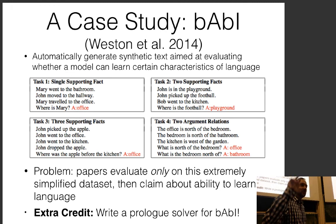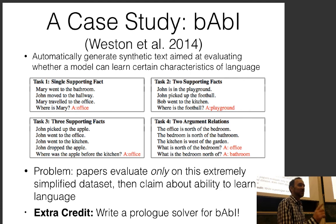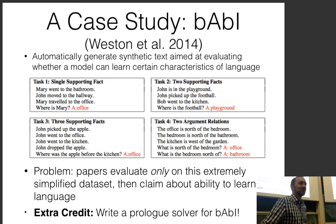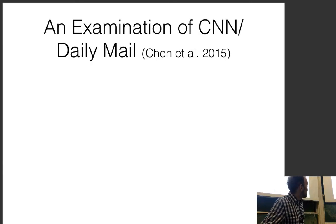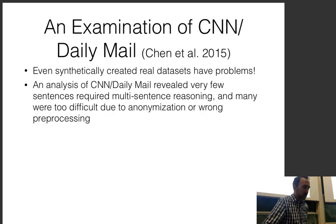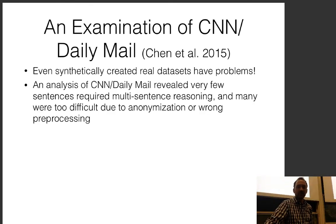There are two extra credit opportunities: solve all quizzes using machine reading, or write a Prolog solver for bAbI — which wouldn't be that hard. Another dataset examination: the CNN Daily Mail dataset was analyzed and found to require very little multi-sentence reasoning — mostly just pattern matching. Many were too difficult due to anonymization errors or wrong pre-processing, with co-reference errors causing about 8% of problems and 17% being too ambiguous or hard.